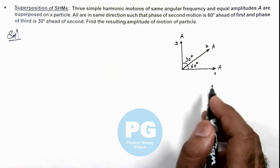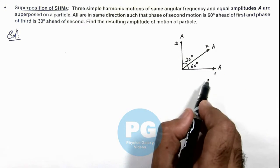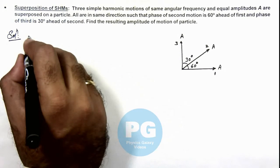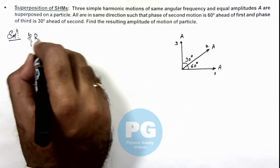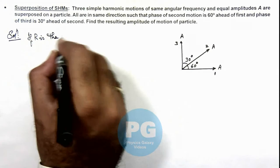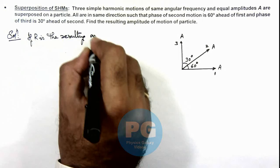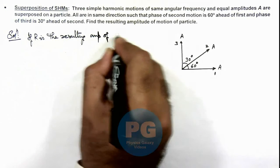So if we wish to find out the resulting amplitude of motion, we can take the vector sum of these. Here we can say if R is the resulting amplitude of motion.